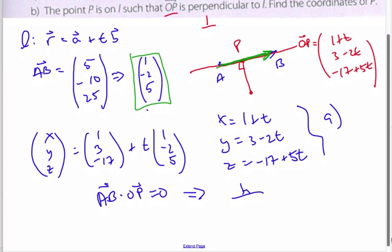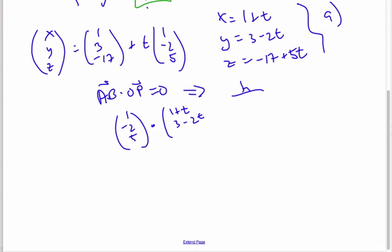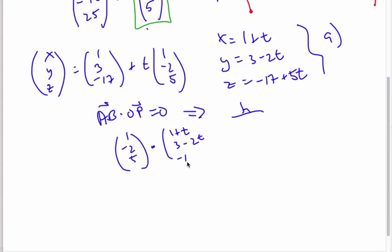So I'm going to take 1 minus 2, 5, dot product it with 1 plus T, 3 minus 2T, and minus 17 plus 5T. That dot product has to be 0.